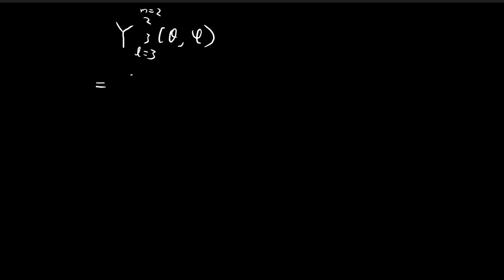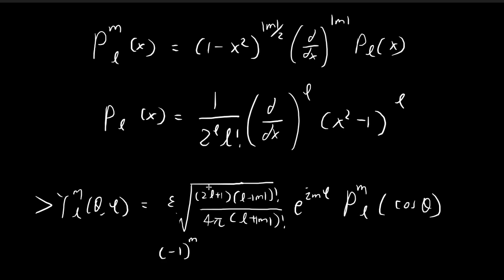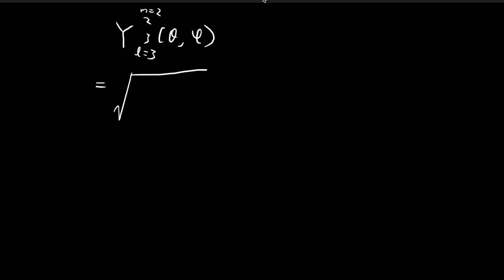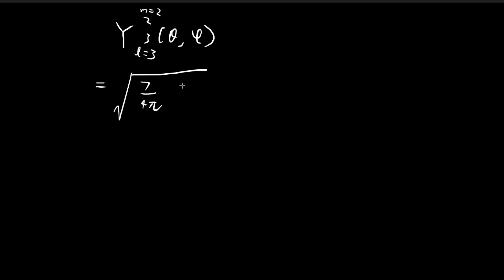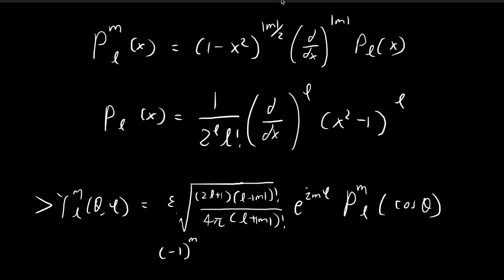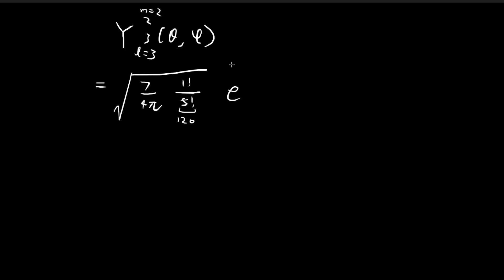Then we have the square root of 2l plus 1. Since l is equal to 3, we have 2 times 3 plus 1, which is 7. So we have 7 divided by 4π. Then we have l minus m factorial — that's 3 minus 2 factorial, which is 1 factorial — divided by l plus m factorial, which is 5 factorial, equal to 120. Then we have e to the power of imφ; since m equals 2, it becomes e^(2iφ).